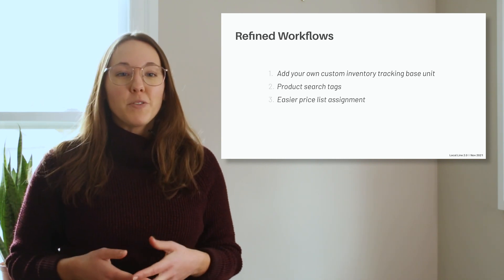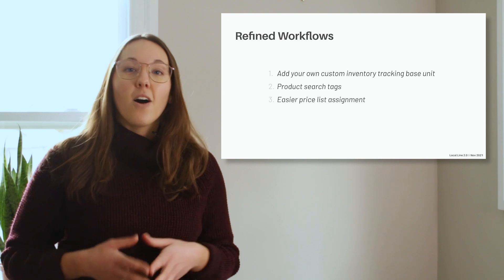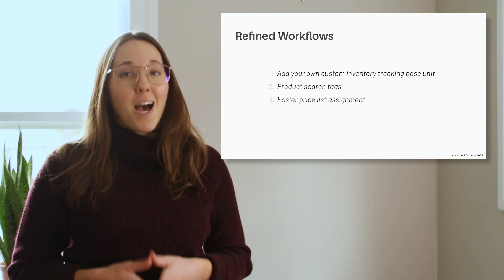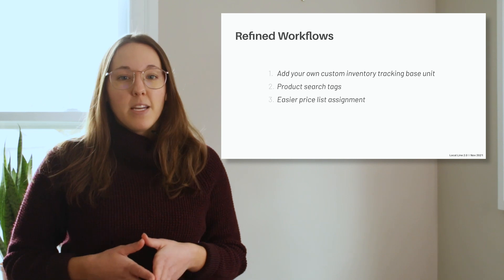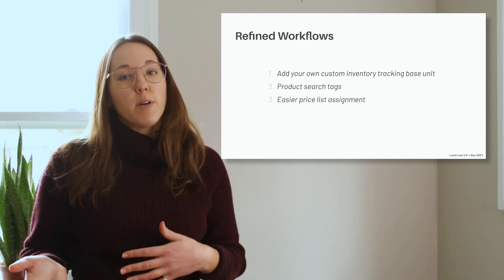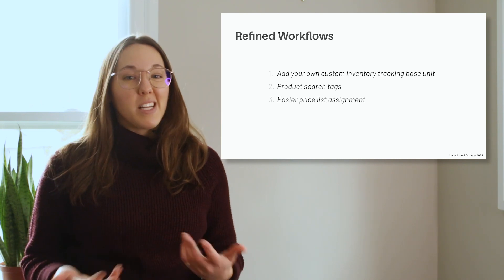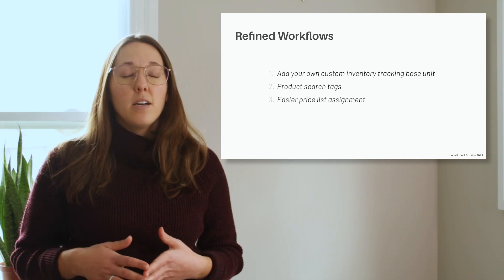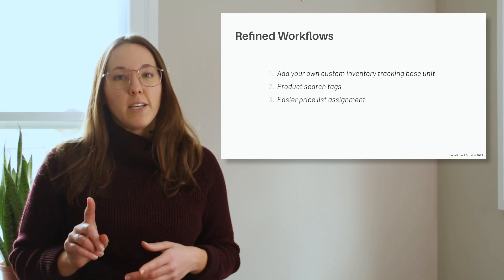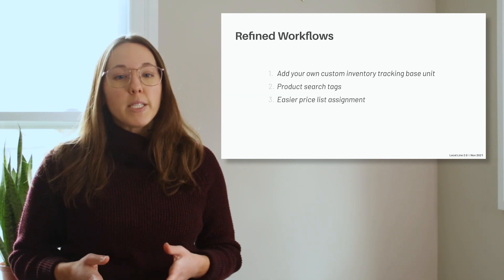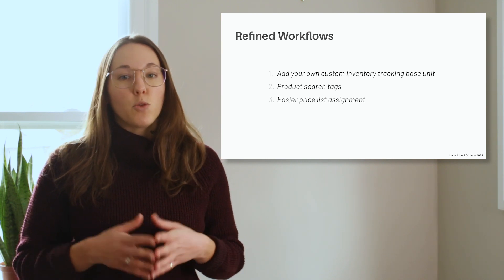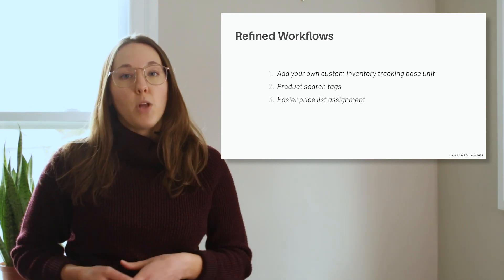And finally, we've introduced easier price list or catalog assignment. This is a big one in terms of optimized UI and time savings for you. Here's a quick comparison to illustrate: today, to assign your products to a catalog, it involves 25 clicks across three screens. In LocalLine 2.0, it involves just 13 clicks on one single screen. You can also assign products to multiple price lists, even with unique price adjustments, directly from the add/edit product flow.